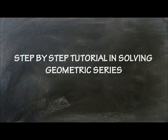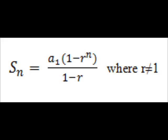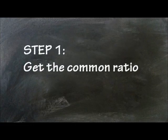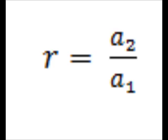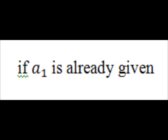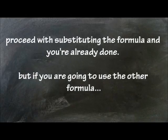Moving on to the step-by-step tutorial in solving for geometric series using the formula S sub n equals a sub 1 times quantity 1 minus r raised to n, all over 1 minus r, where r is not equal to 1. Step 1: Get the common ratio using r equals a sub 2 over a sub 1. If a sub 1 is already given, proceed with substituting the formula, and you're already done.